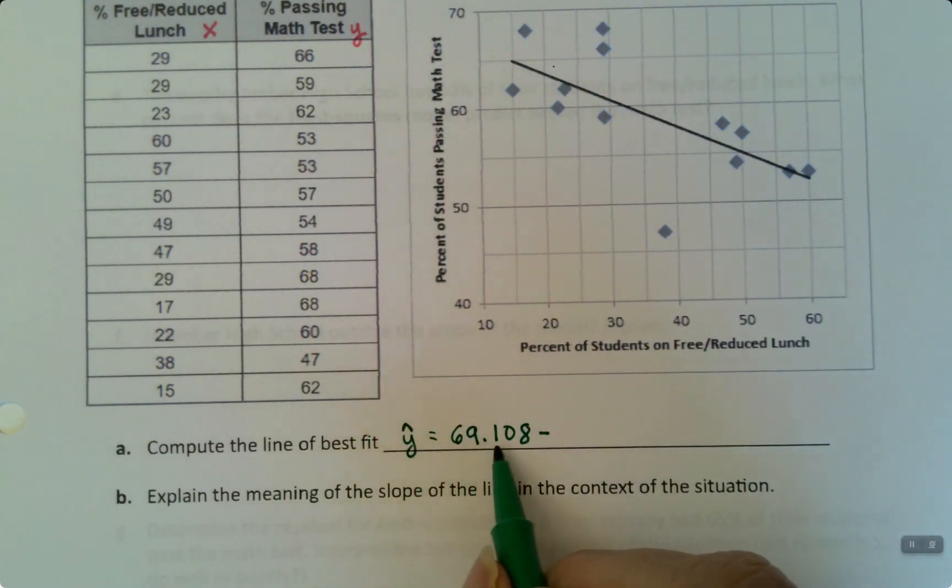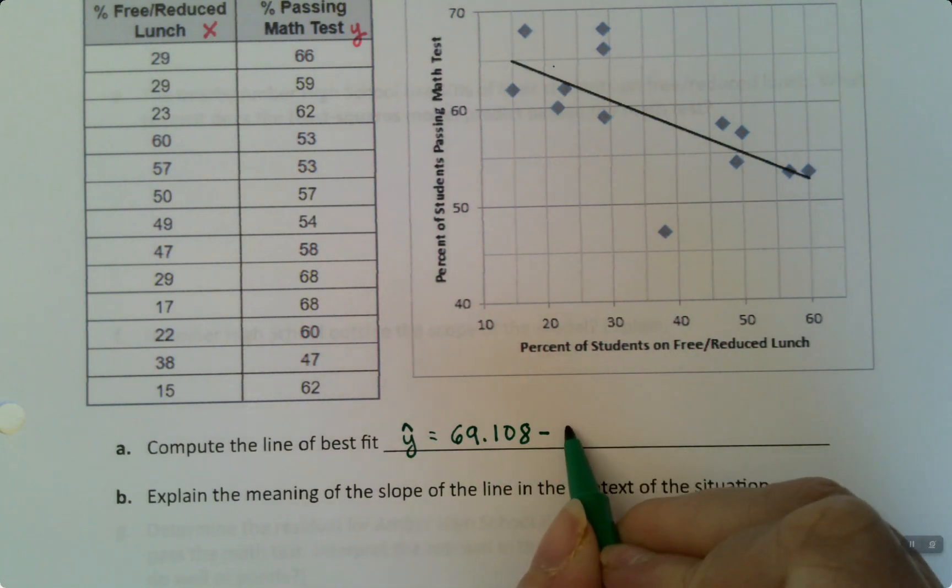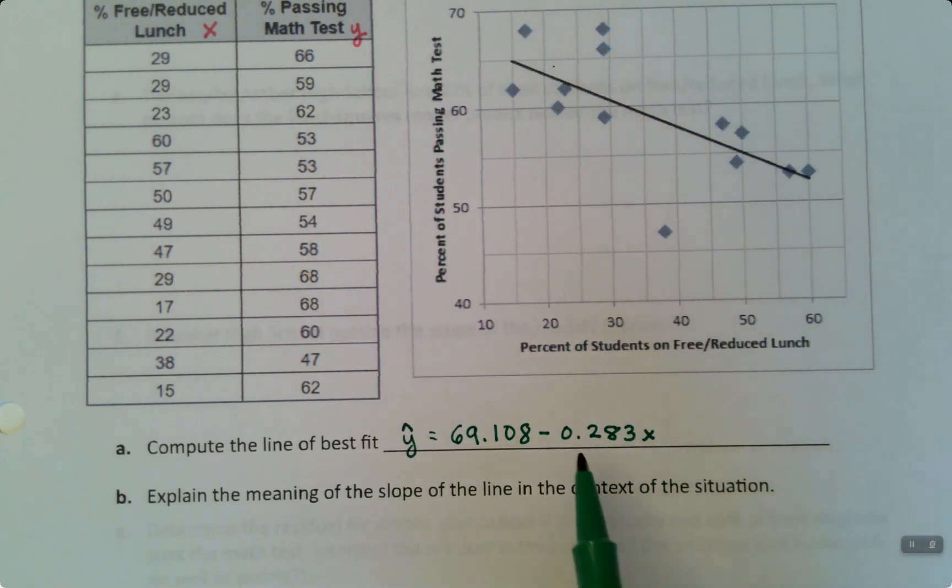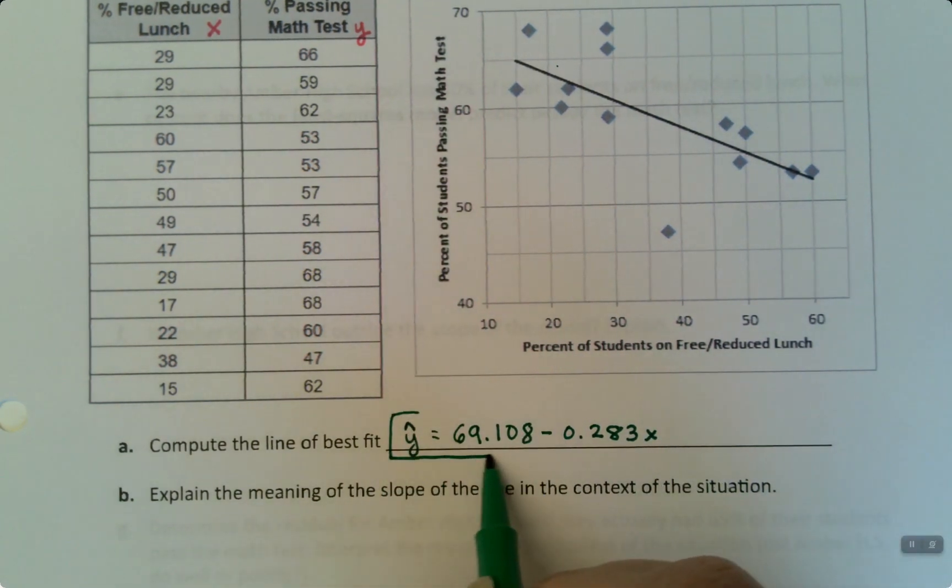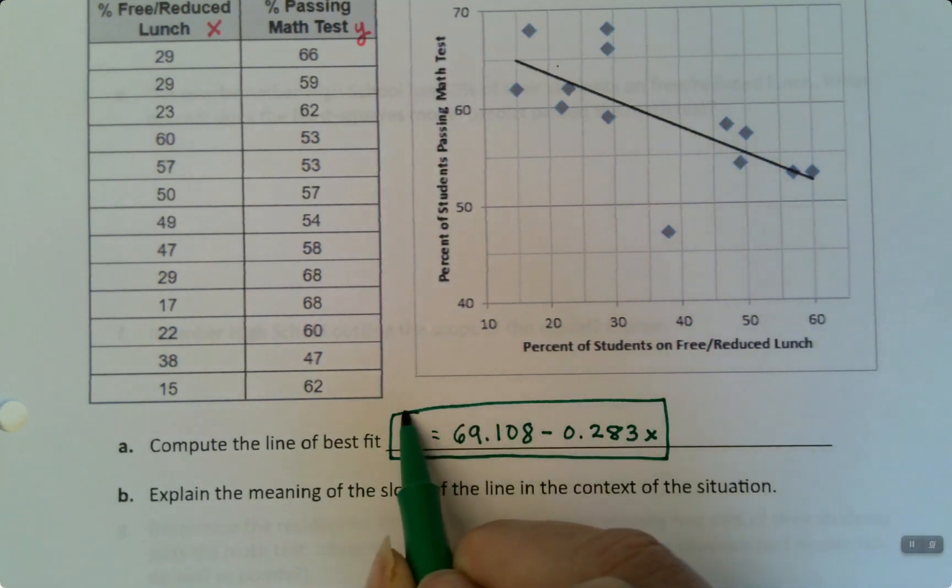But it technically is a Y hat if it's the line and not the dots. So Y hat is 69.108 take away 0.283 if we round it, because it was 2825X. That is the regression equation right there. That is the line of best fit.